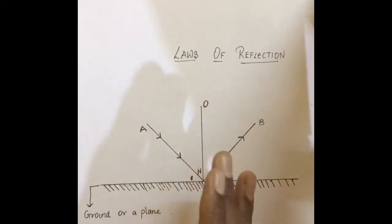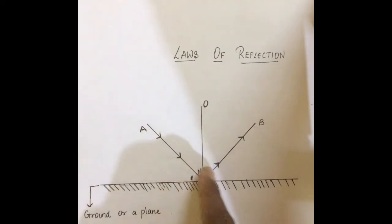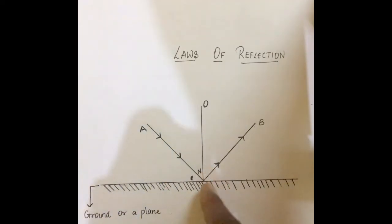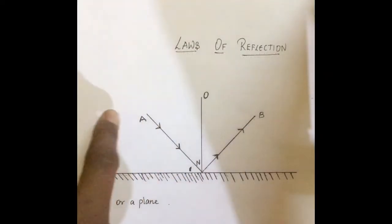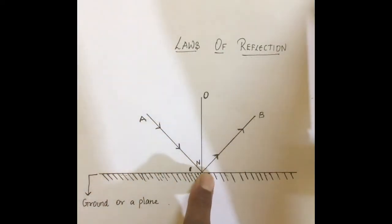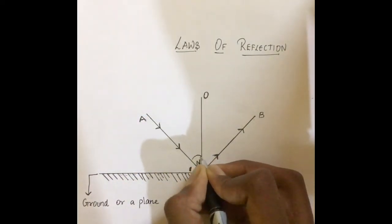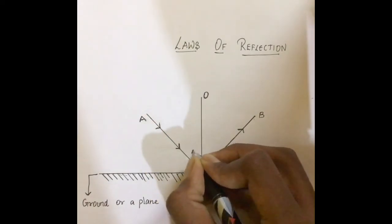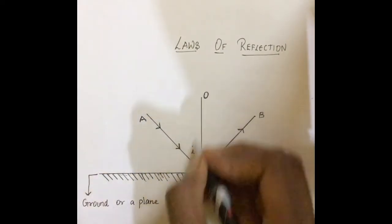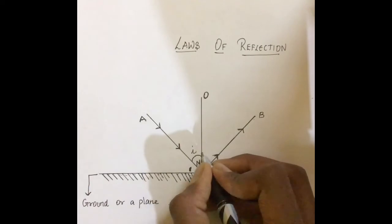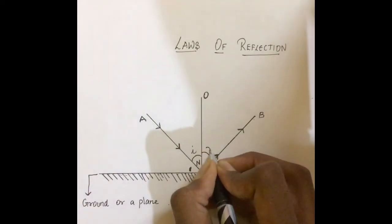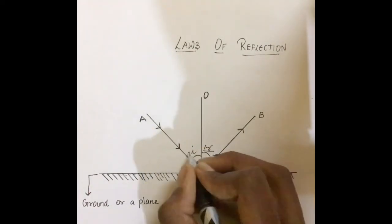The perpendicular line drawn from the point of incidence is called the normal. In this diagram, line ON is the normal. The angle between the incident ray and the normal is called the angle of incidence, and we can mark it as angle i. The angle between the normal and the reflected ray is called the angle of reflection, and we can mark it as angle r.